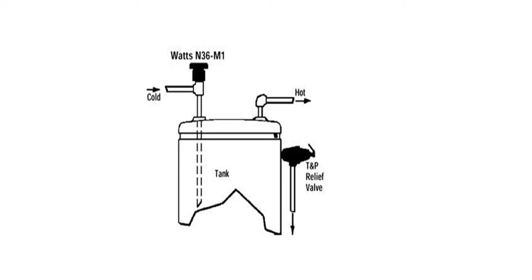The vacuum relief valve is located above the water heater and will open to the atmosphere when a back-siphon or vacuum occurs on the tank. This allows air to enter at the vacuum relief valve so the heater or tank will not be drained down. This protects the heaters from dry-firing the elements or burner and can also prevent the tank from collapsing due to vacuum.